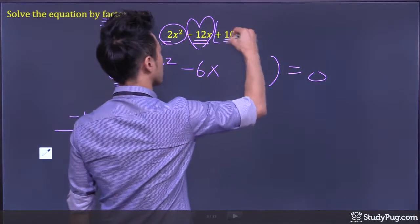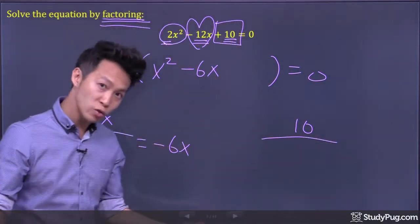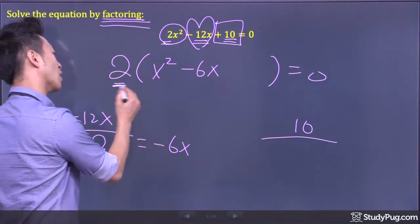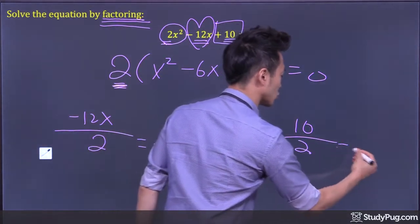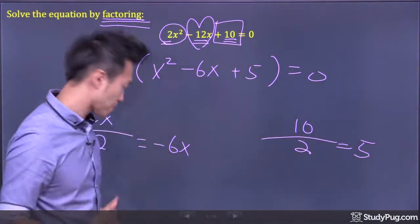Now for the third term, the constant term, positive 10. What do we factor out? We factor out 2, so divide by 2. So we have 5 left inside the bracket, positive 5.